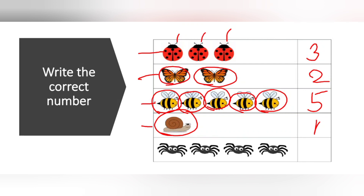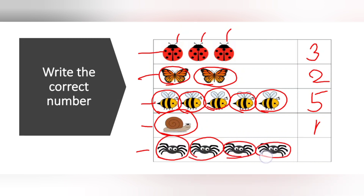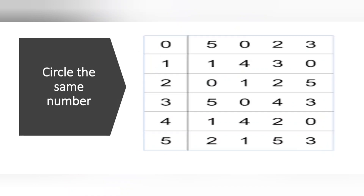Now in the last row, how many Spidermans are there? 1, 2, 3, 4. How many are there? 4 are there. Yes, 4 Spidermans are there. Very good.